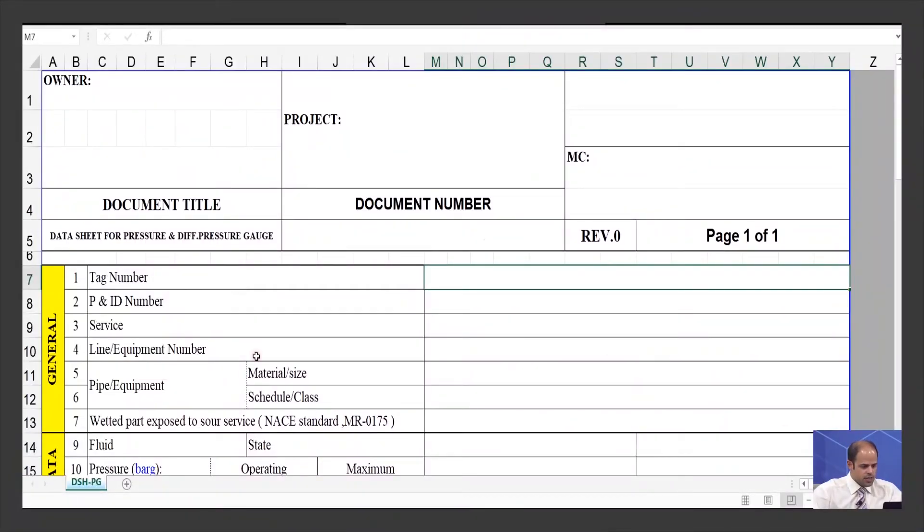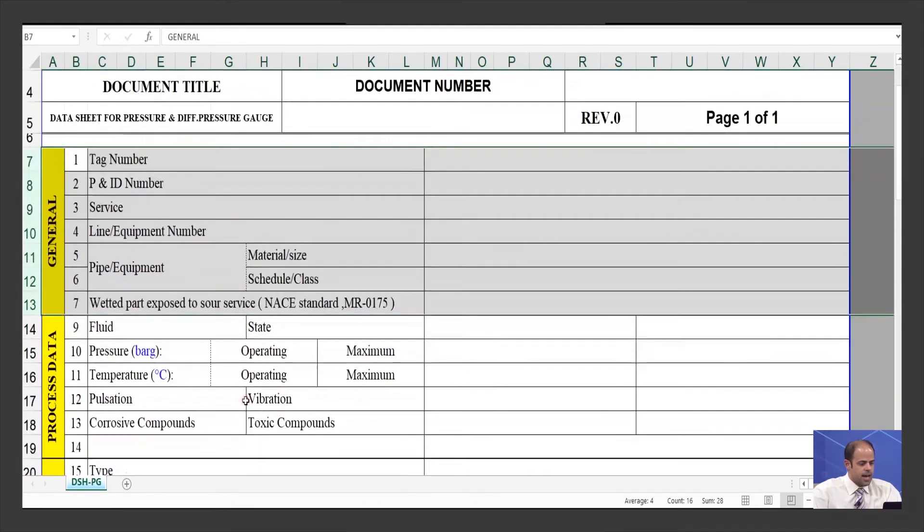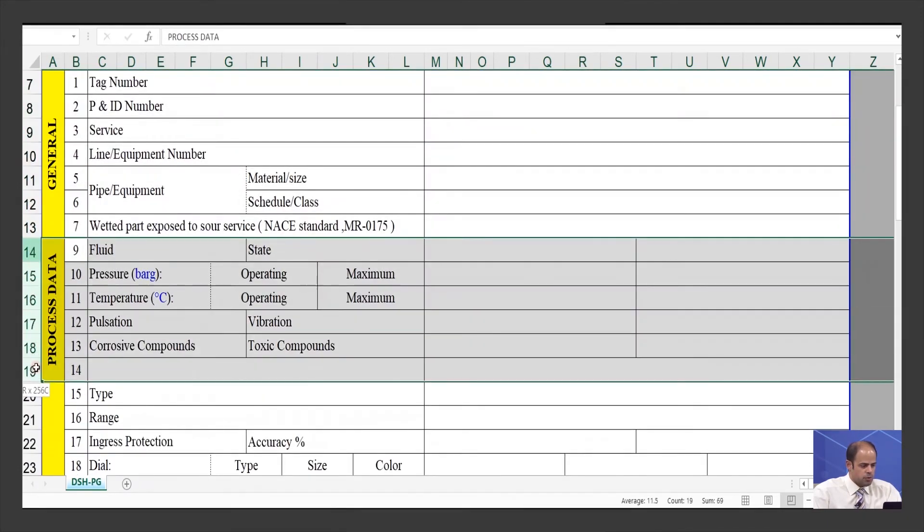As you can see here, we have a datasheet. I mentioned some items related to these things - it's related to the general case. Here, you need to write some items for tag numbers, P&ID numbers, services and things like that. After that, you will have the process data. Some items such as pressure, temperature, and the state of the fluid will be filled here too.